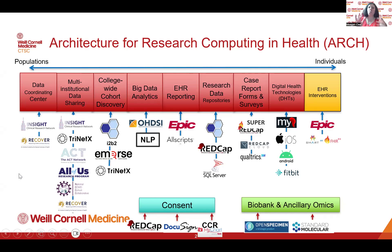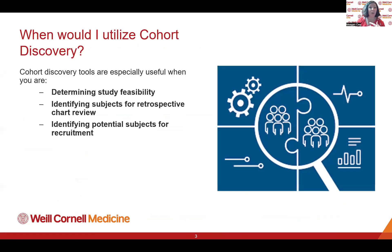TrinetX is just one of many services available through our ARCH system. We were already using TrinetX for many years, but it's only recently become available for cohort discovery. Cohort discovery is when you're trying to find a group of potential subjects — whether that's for determining study feasibility before IRB approval, for retrospective chart review, or for finding potential subjects for recruitment in a prospective study. All of those can be satisfied using cohort discovery.